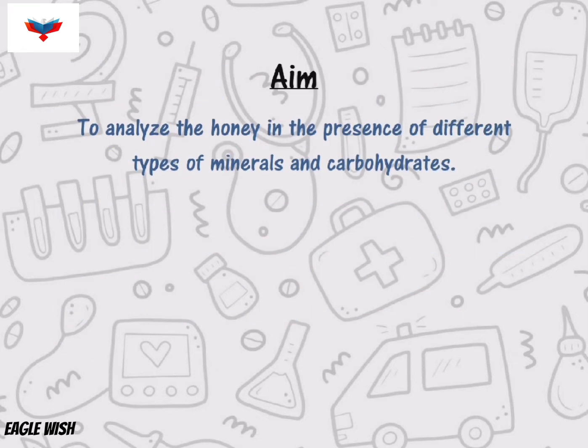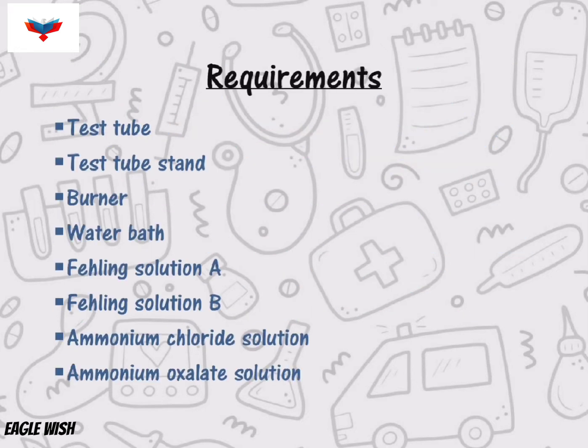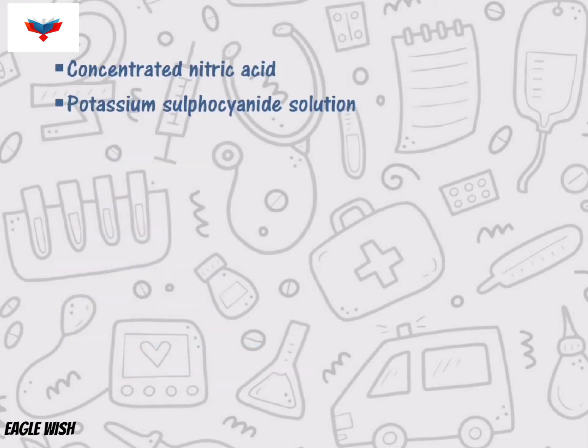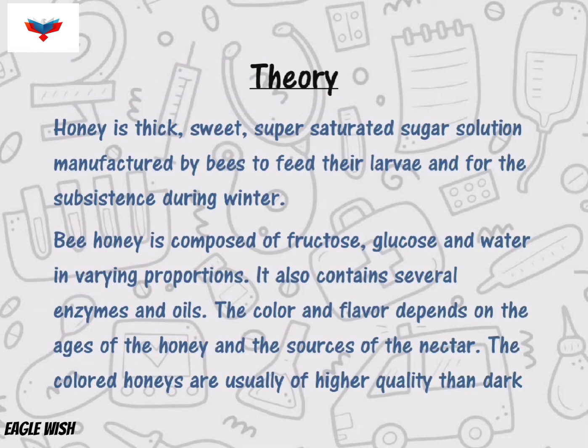After that we write about the aim of the project. We also have to write the materials and chemicals used in the analysis. Don't forget to mention the theory part of your project.